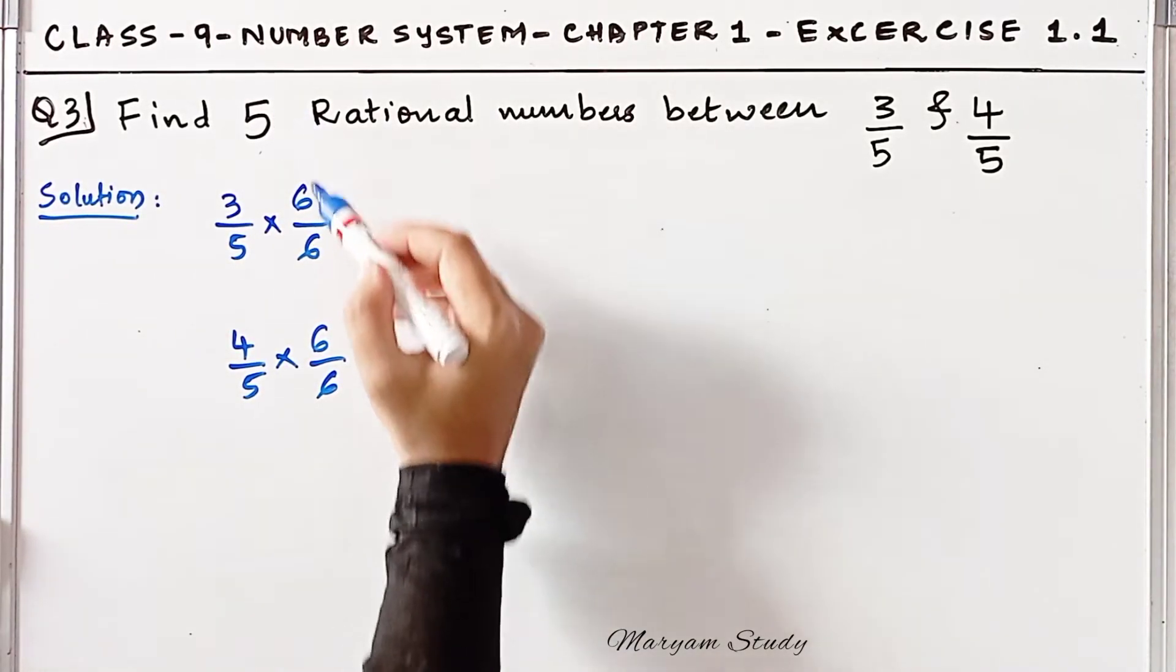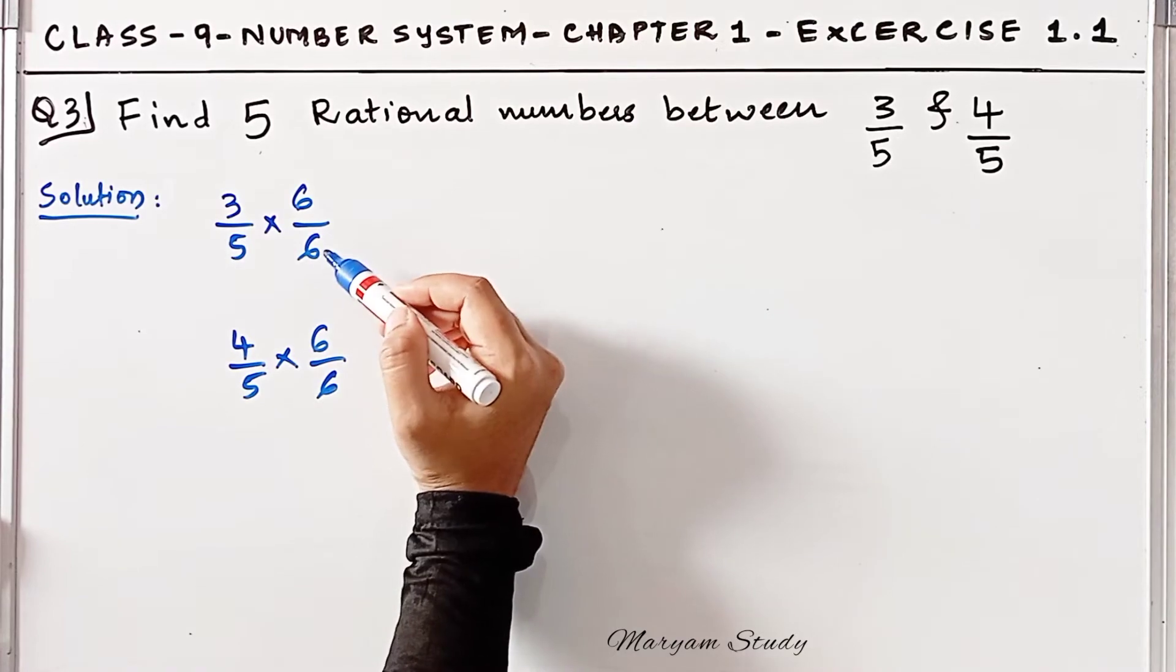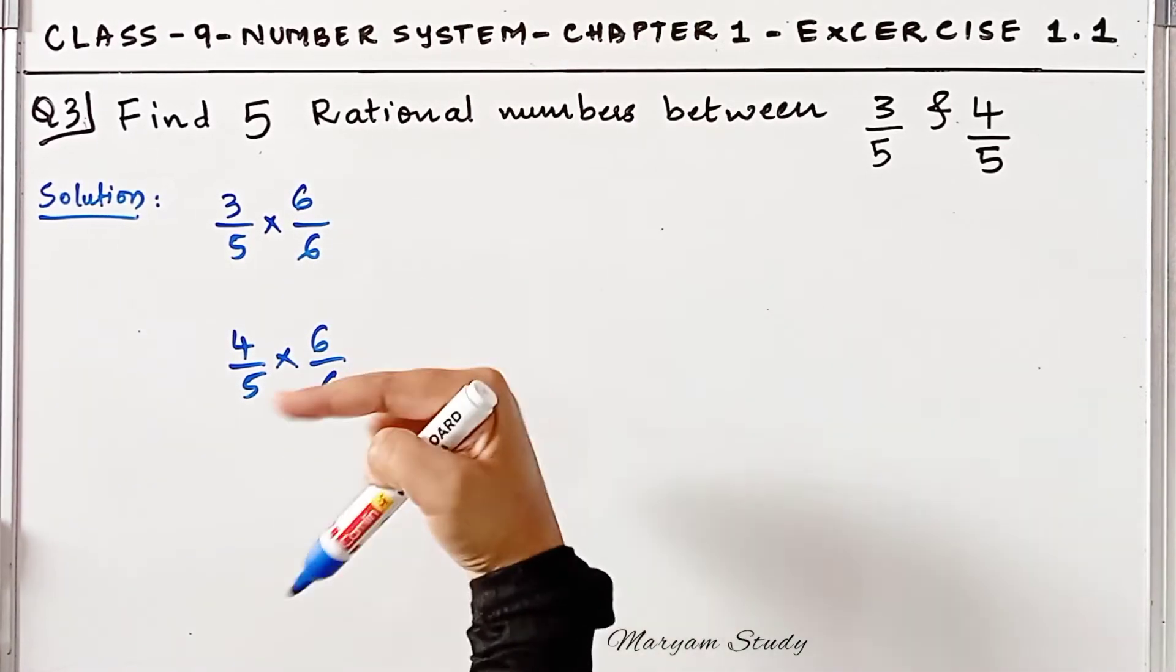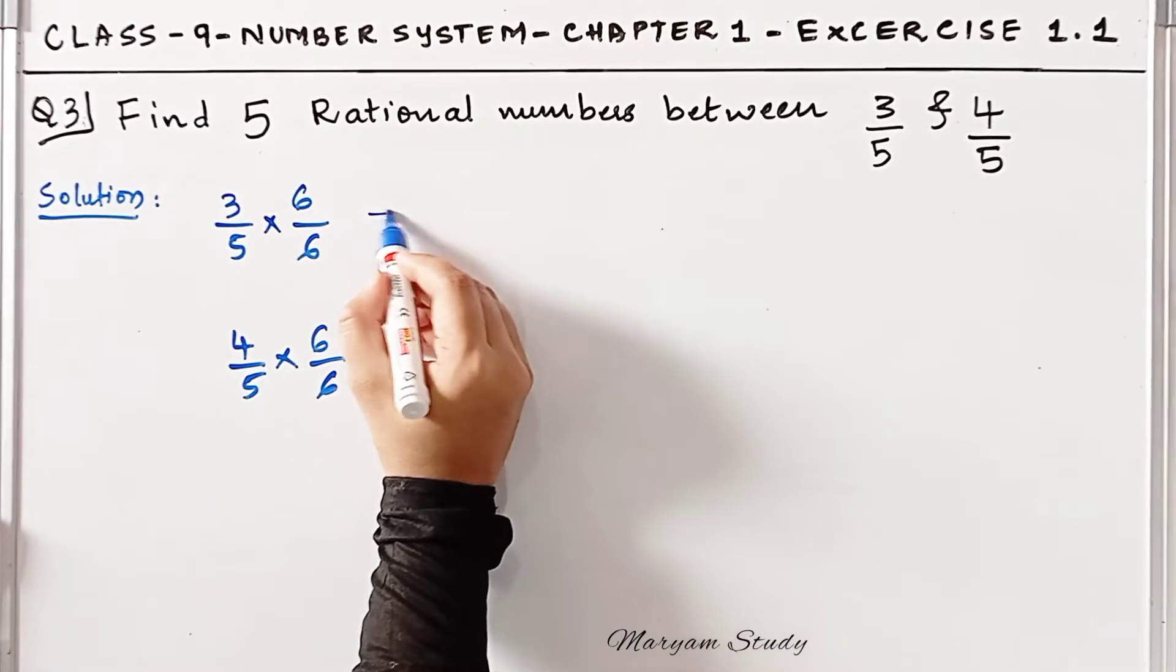If 6 were asked, we would multiply by 7/7. Basically, increase the number by one and multiply or divide. That's it.